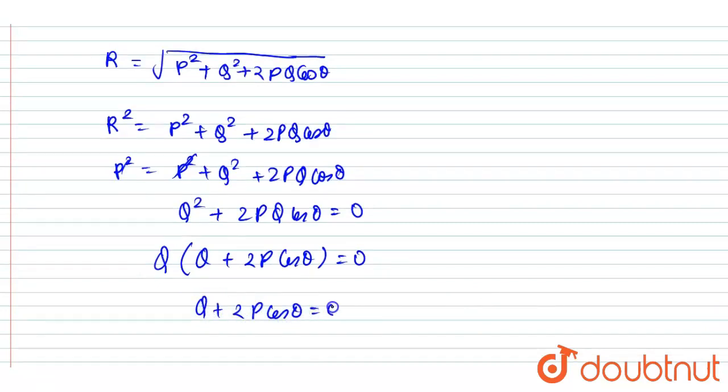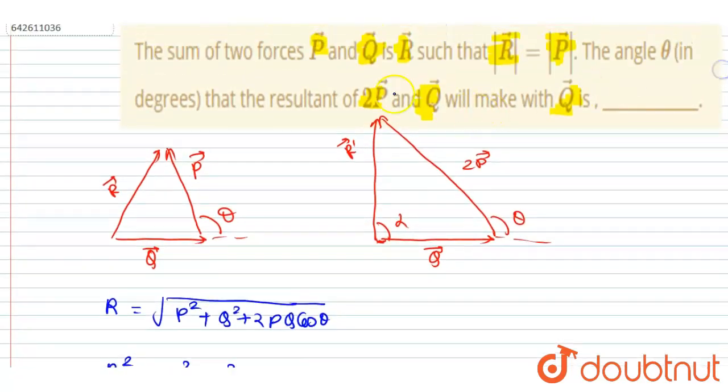So here Q is not non-zero quantity, so I will write Q plus 2P cos theta is equal to zero.